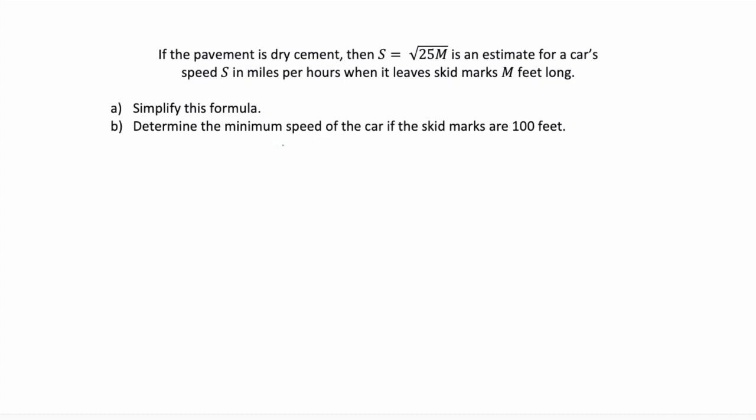Part A wants us to simplify this formula, so let's look at part A. If s equals the square root of 25 times m, well we can use the product rule which lets us break this into two separate radicals, the square root of 25 and the square root of m. And we can take the square root of 25 since 25 is a perfect square. And the square root of 25 is 5. So our simplified form is s equals 5 times the square root of m.